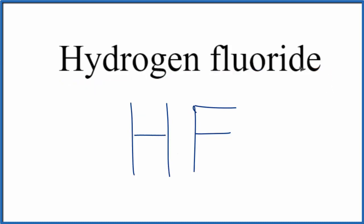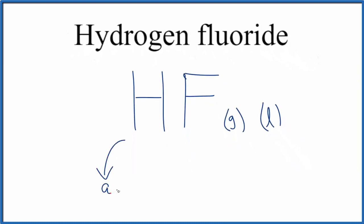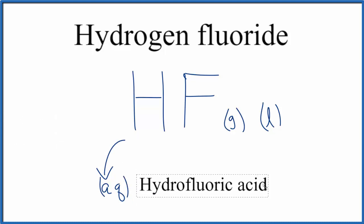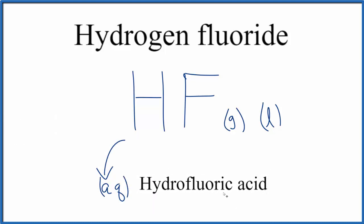When we have hydrogen fluoride like this, we're talking about HF as either a gas or as a liquid. When we put this in water, you put HF in water, you make it aqueous. That is called hydrofluoric acid. So hydrofluoric acid is when we have HF in water, and hydrogen fluoride is when it's a gas or a liquid.